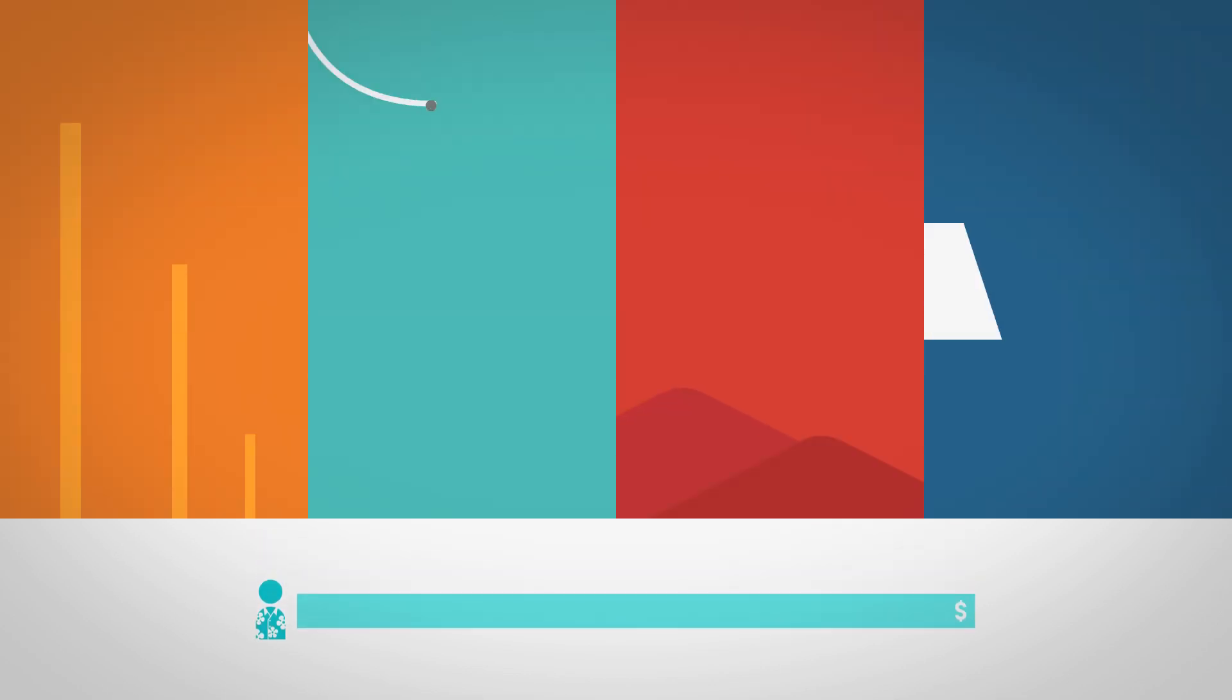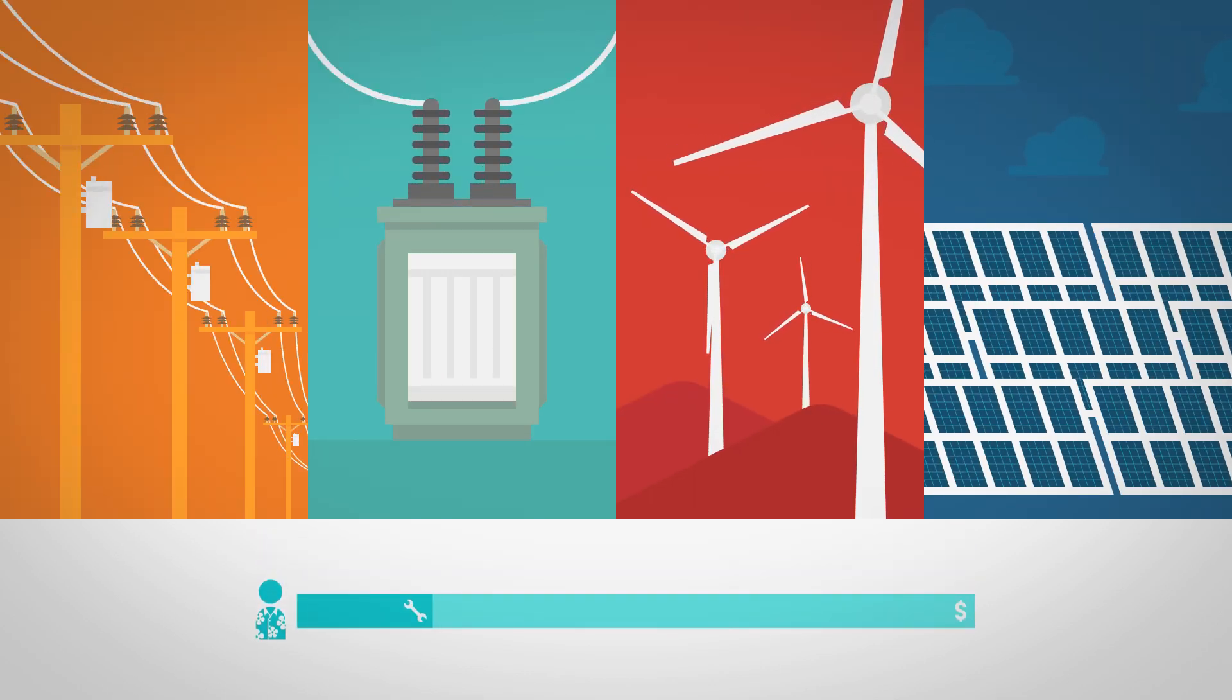Ted pays $200 a month for electricity. A portion goes to maintain and improve the electric grid.